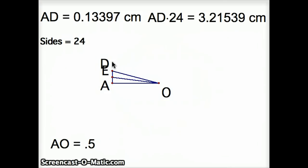And OD is going to have a length of 0.51764. We're going to use these things in order to calculate out the length of AE. And once I have the length of AE, I'm going to multiply that by 48, and that's going to give me an even better approximation for pi.